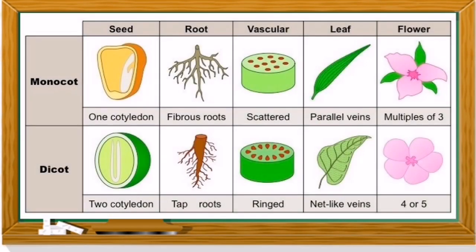Look at these examples of monocot and dicot — they have differences in seed, roots, vascular bundle, leaf, and flowers. In monocot, we have one cotyledon, fibrous roots, scattered vascular bundles, parallel leaf veins, and the flower parts are in multiples of three.